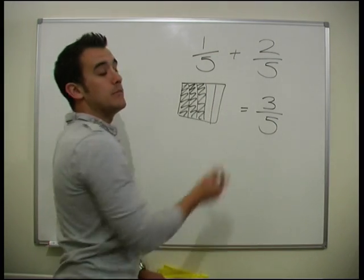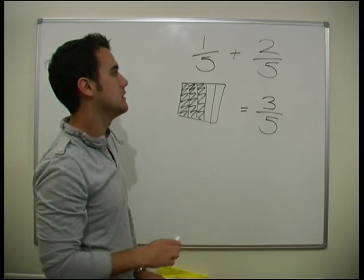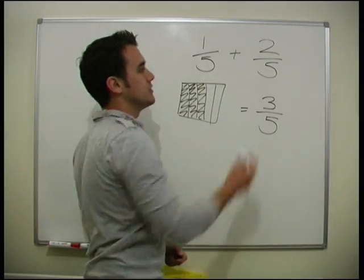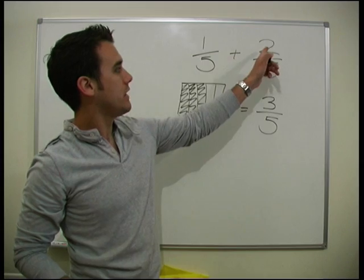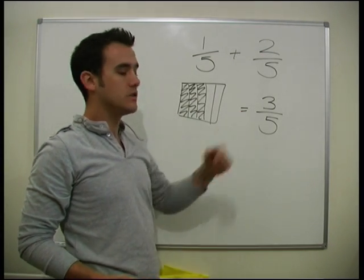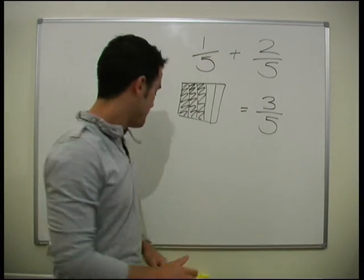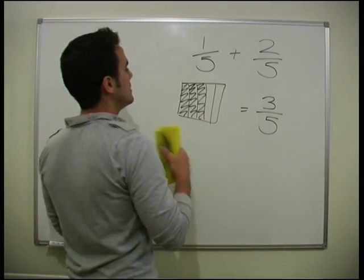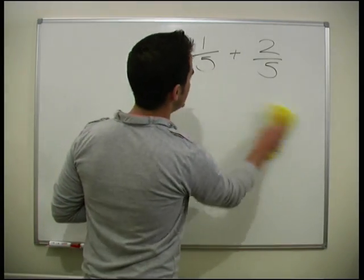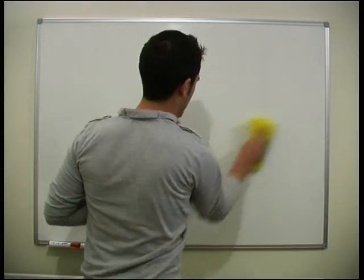Adding fractions when they've got the same number on the bottom, the same denominator, is very straightforward. You just add the two top numbers together. So 1 fifth plus 2 fifths equals 3 fifths. It's when the number on the bottom changes that we get into trouble.